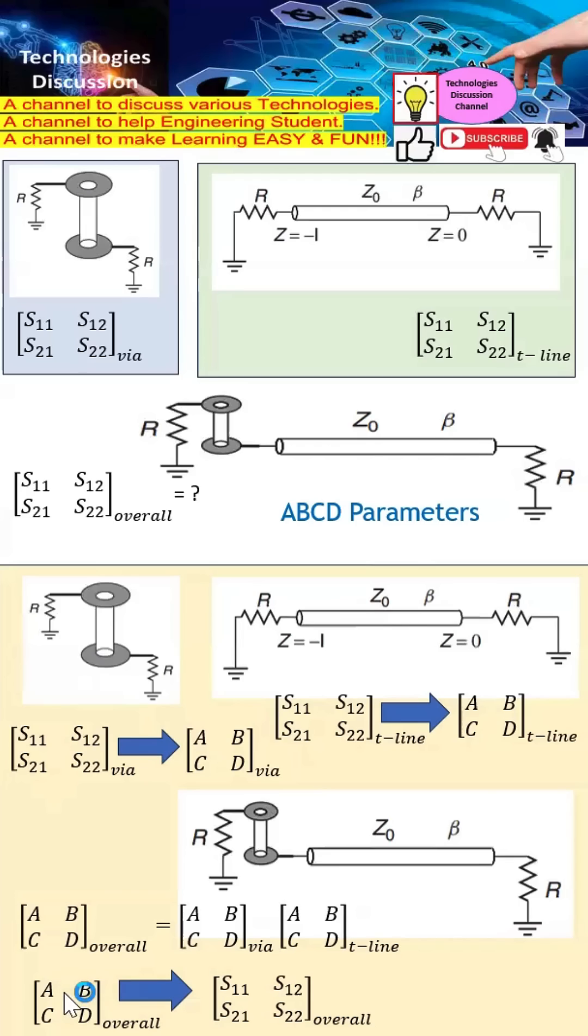Next, I need to convert the overall ABCD parameters into S parameters. Then this set of S parameters will be the overall S parameters of the VNA connected to the transmission line, as you can see here.